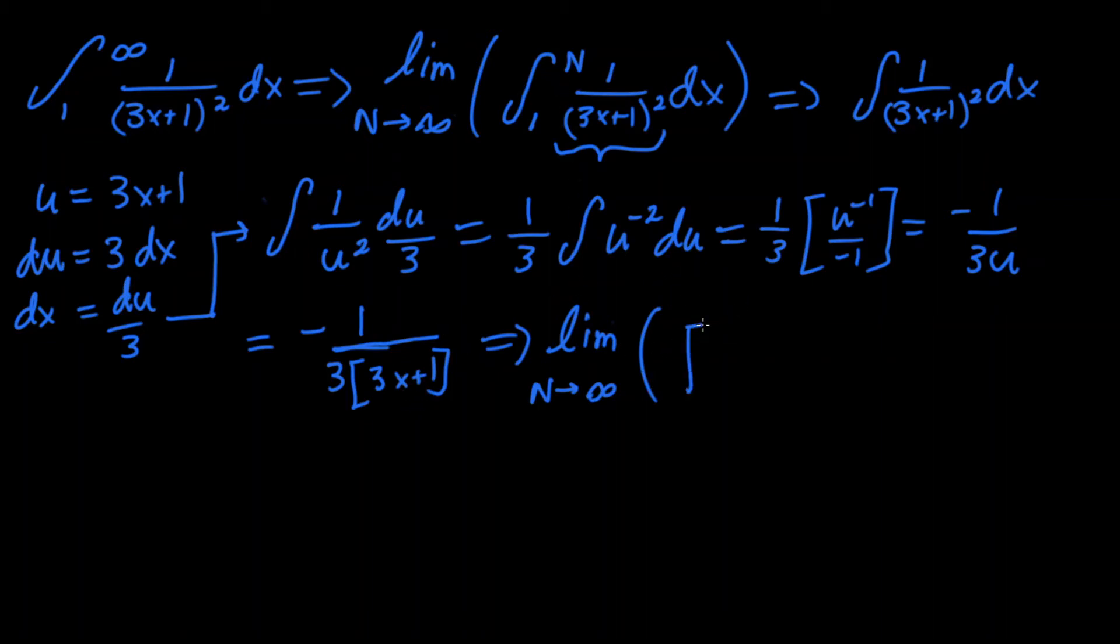So let's write the brackets, negative 1 over 3 times 3x plus 1. And let's close that up, put that between 1 and n. Remember, n still represents infinity in this case, and then close that.